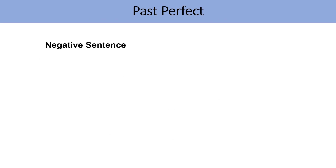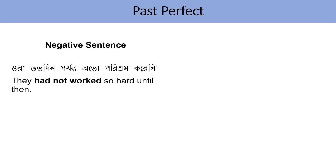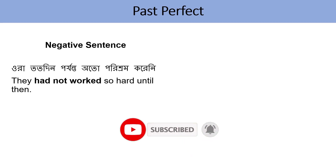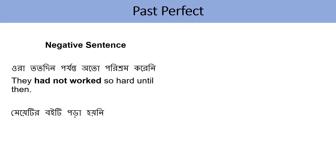Past Perfect negative sentences — how do we form them? ওরা ততদিন পর্যন্ত অত পরিশ্রম করেনি — They had not worked so hard until then. 'They' is the subject, followed by 'had', then 'not' (because it's negative), then 'worked' (past participle). মেয়েটির বইটা পড়া হয়নি — The girl had not read the book. Remember: 'read' here is the past participle form — R-E-A-D — which can be pronounced both ways.